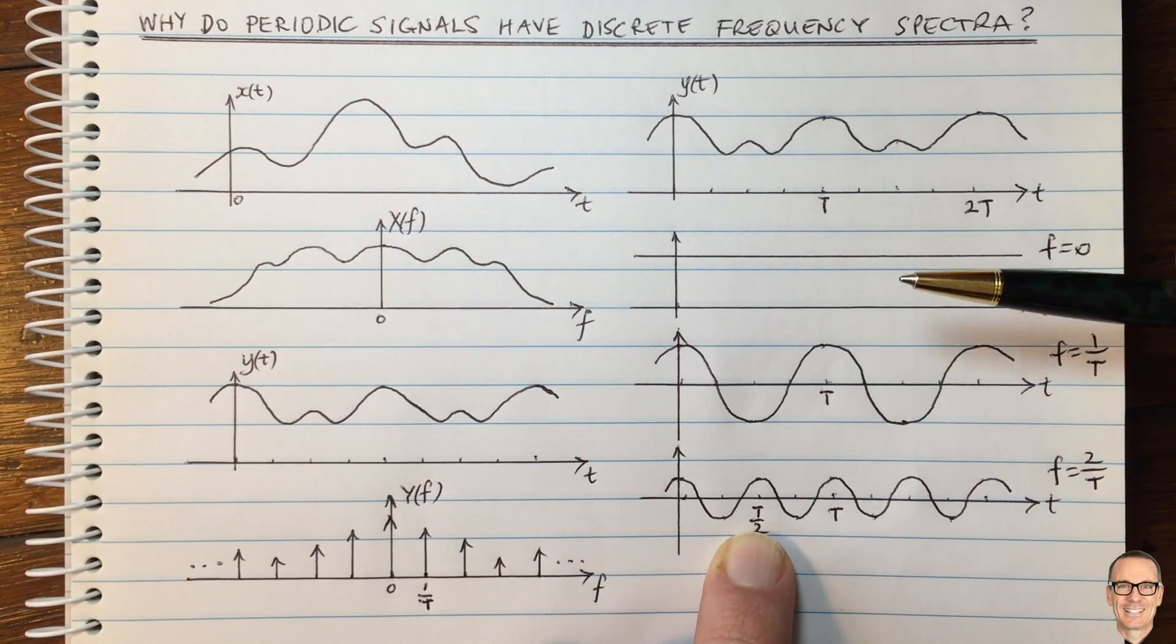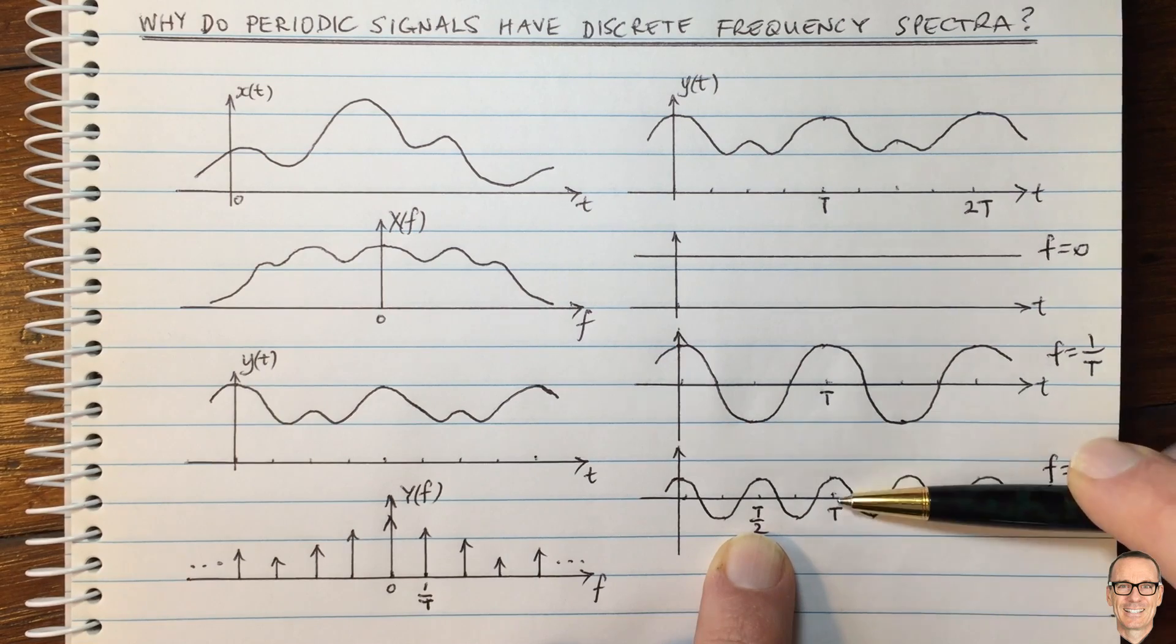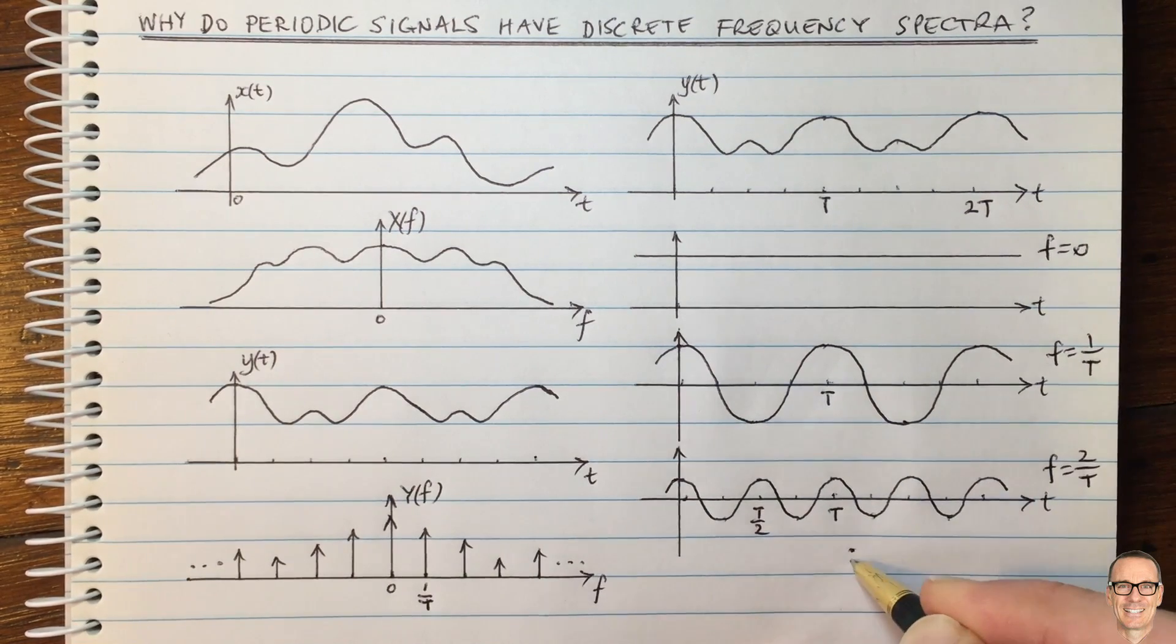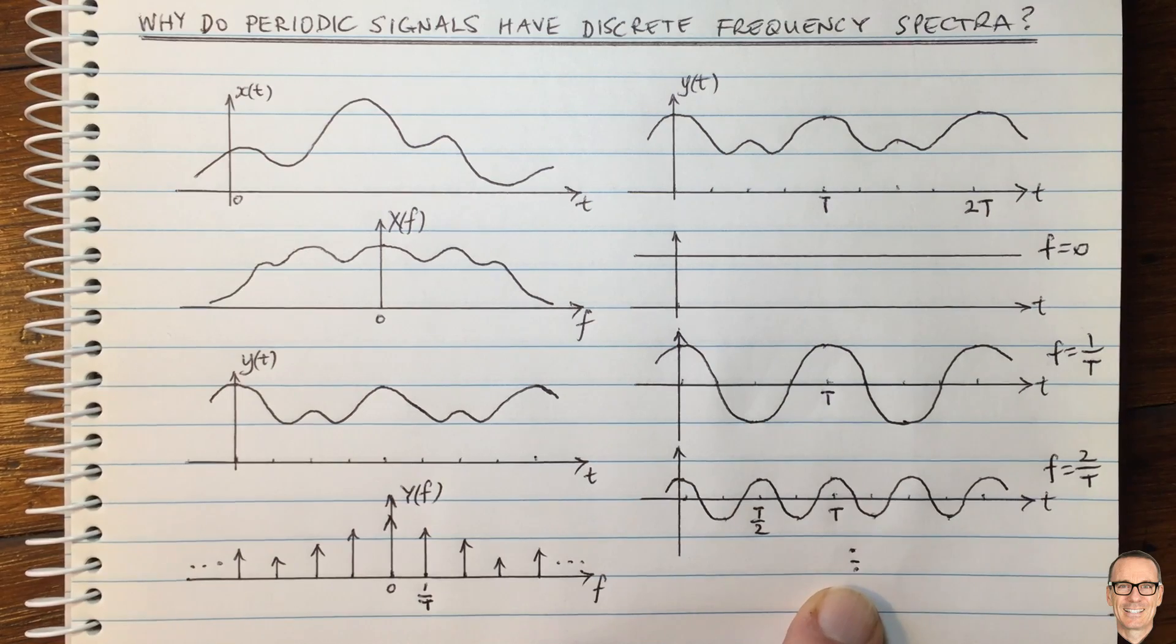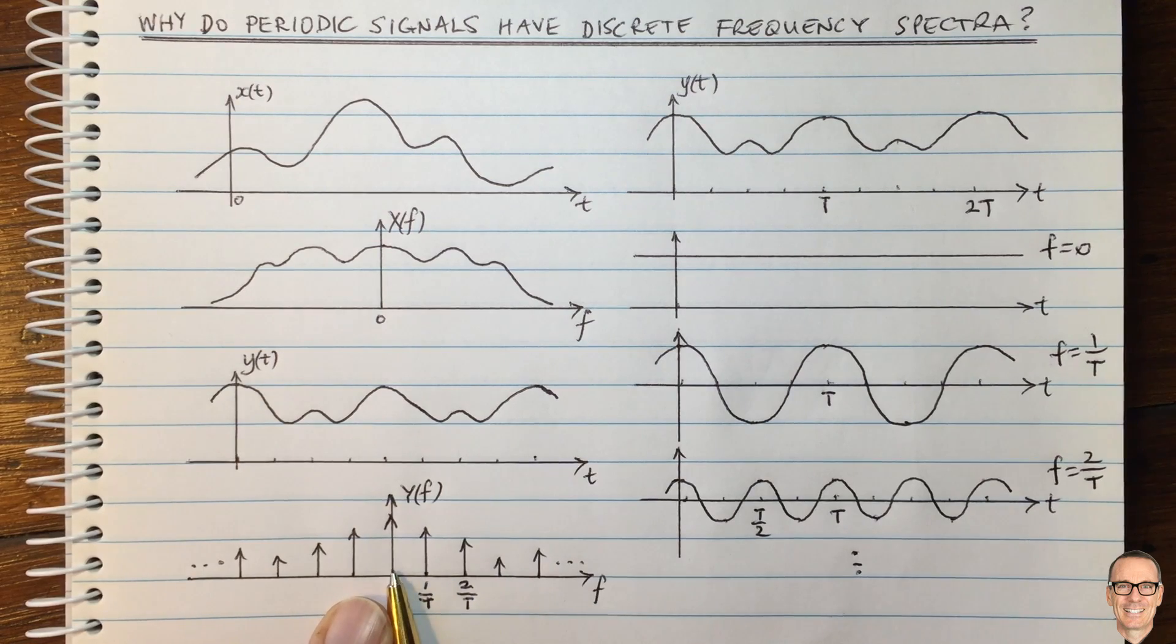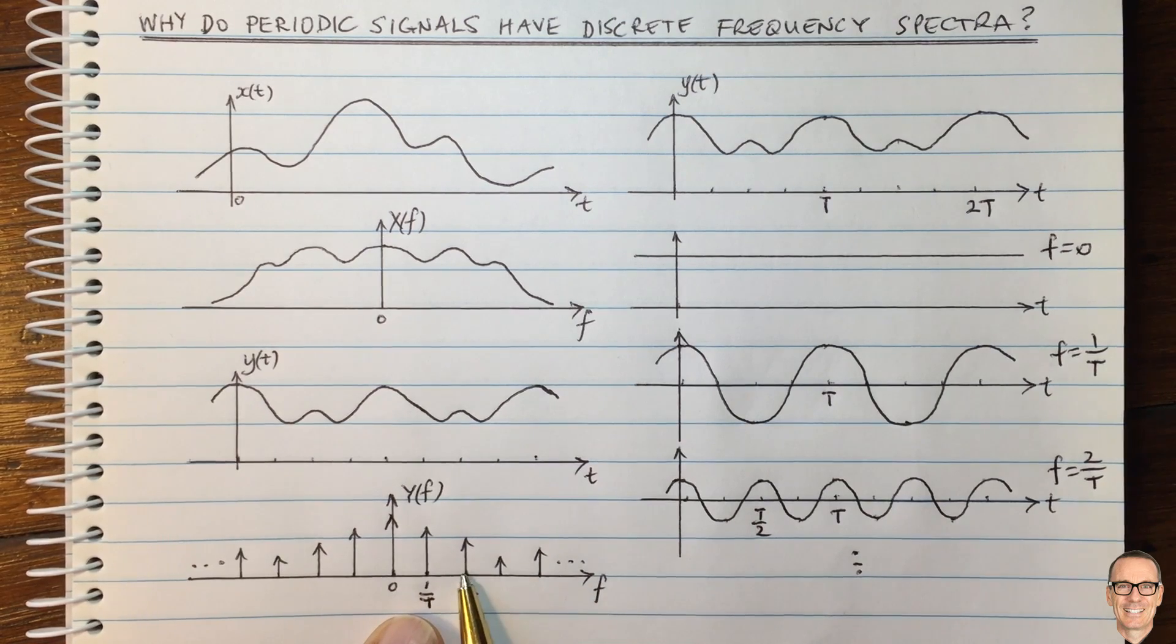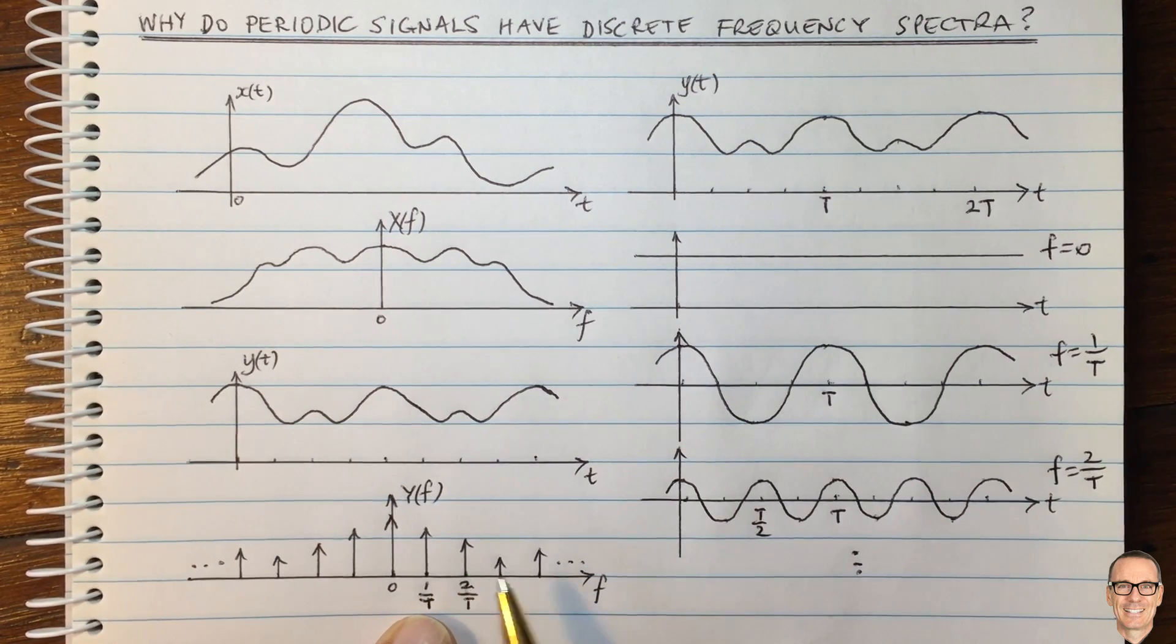I've done two here, but it could also be three times and four times and so on. And so over here, we've got these delta functions where there's no possibility of a frequency between 0 and 1 on T, no possibility between 1 on T and 2 on T, and so on for all the higher multiples.